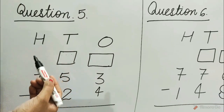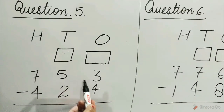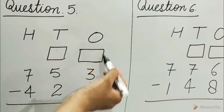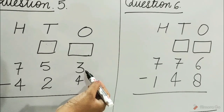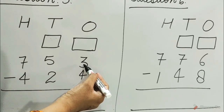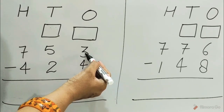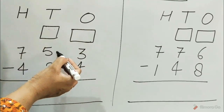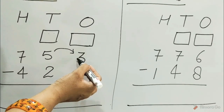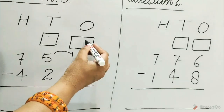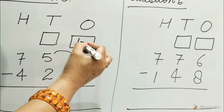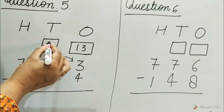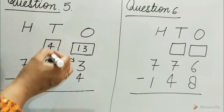Question number 5: 753 minus 424. Look at the ones column. 4 is bigger than 3 so it cannot be subtracted. We regroup the ones column. Borrow 1 ten from the tens column and add it to the 3 ones. 1 ten plus 3 ones is equal to 13 ones, and 4 tens are left in the tens column.